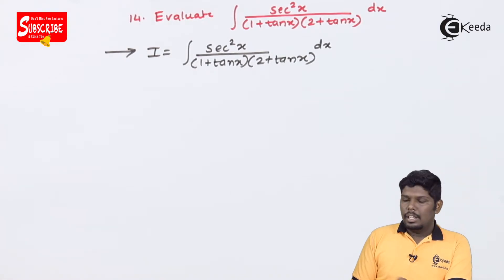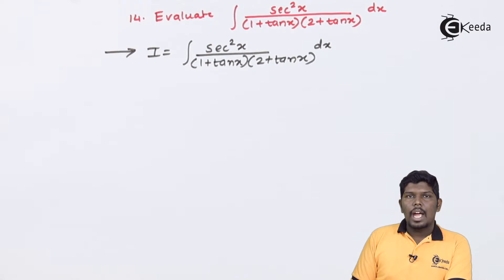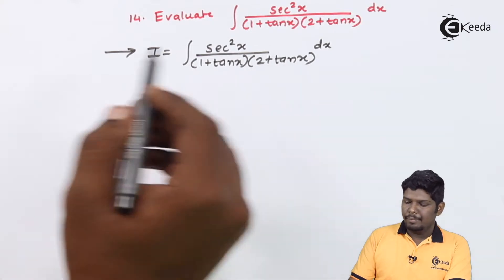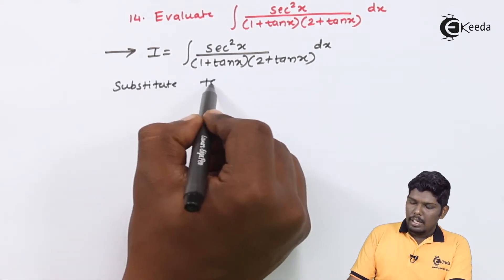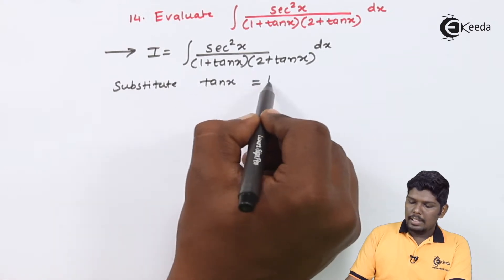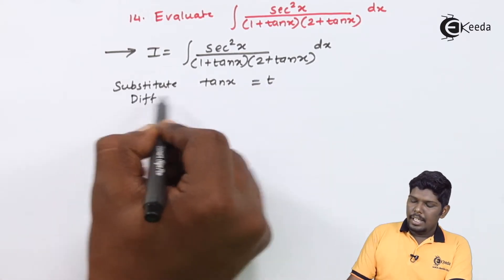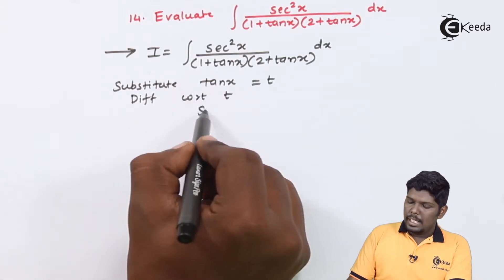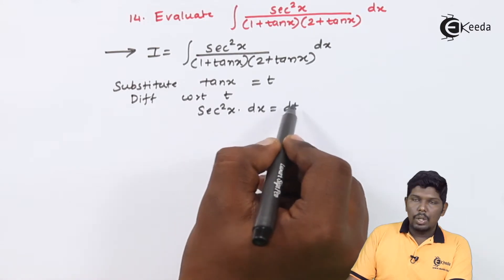Here you can clearly see the function present in the numerator is sec²x, and the function whose derivative is sec²x is tan x, which is already present in the denominator. Let us substitute tan x as t; differentiating with respect to t, this will give you sec²x dx = dt.